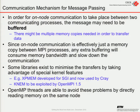For message passing, we can do on-node communication, but you may still have to buffer the data as you transfer it around, whereas in shared memory it's much easier. On-node communication is just a memory copy, but the operating system can sometimes get in the way by forcing you to put the memory from one process into a common area that the other process may have to get a second copy of. You may get a lot of copies with MPI processes and buffering, which consumes your memory bandwidth and slows down the communication.